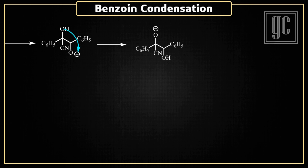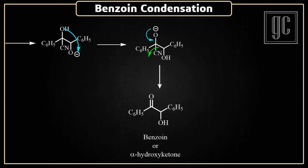The carbon atom that has cyanide and the negatively charged oxygen atom is very reactive. In order to increase stability, one electron-deficient group has to leave the molecule. So the negative charge on oxygen attacks on the active carbon, and the cyanide ion leaves as a leaving group. A carbon-oxygen double bond is formed and the final product, alpha-hydroxy ketone, is formed.